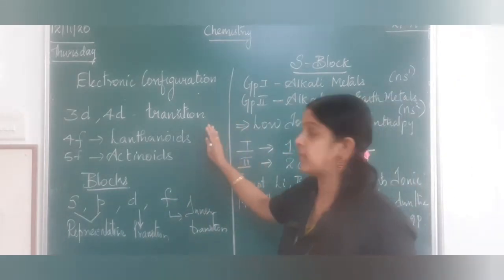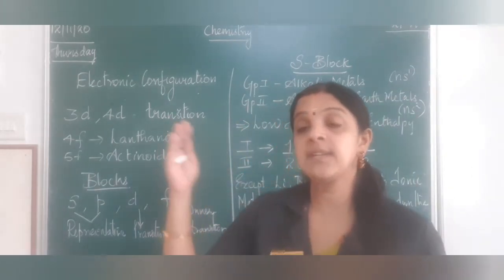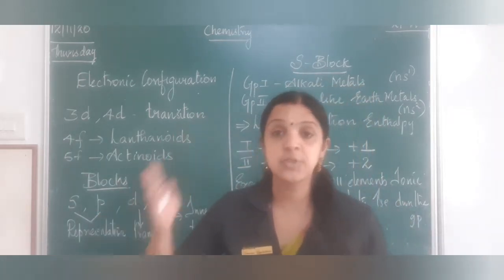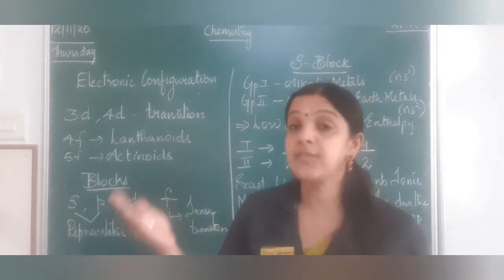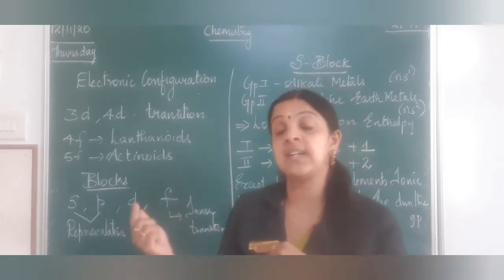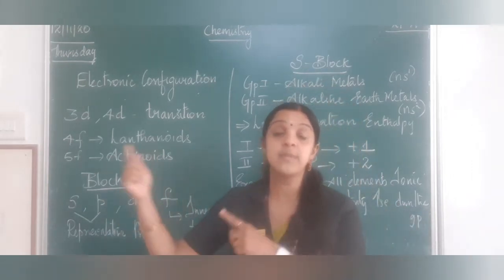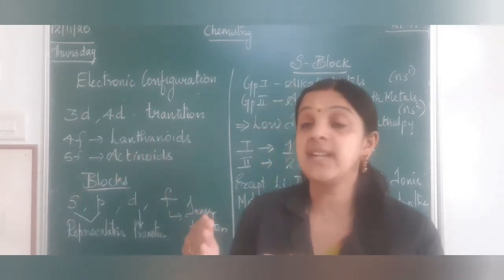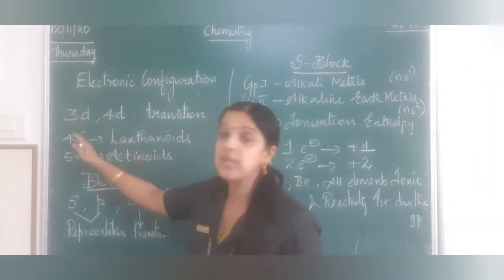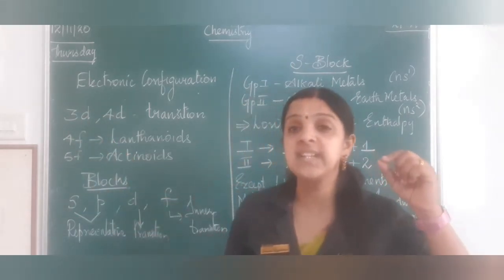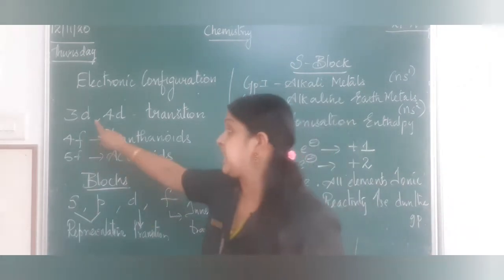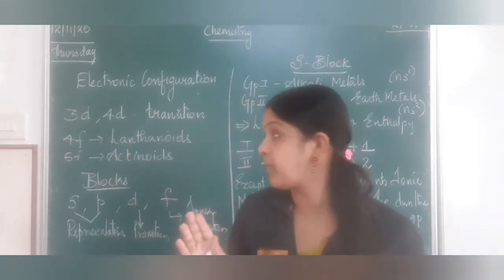In electronic configuration, whenever S and P come, it is 1S2, 2S2, 2P6, 3S2, 3P6. But after 3P we do not write 3D — instead we write 4S, because when potassium and calcium come, 3D has more energy than 4S. So 4S comes first, then 3D. Whenever 3D starts getting filled with electrons — in the D subshell a maximum of 10 electrons can be accommodated.